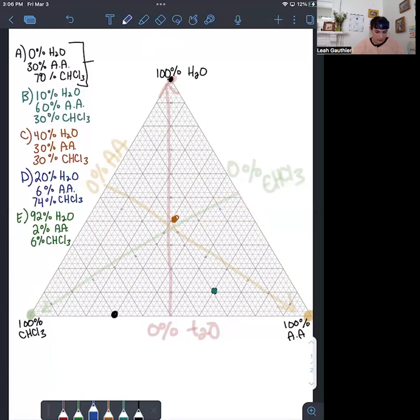Point D is 20% water, 6% acetic acid, 74% chloroform. So 20% water will be along here.